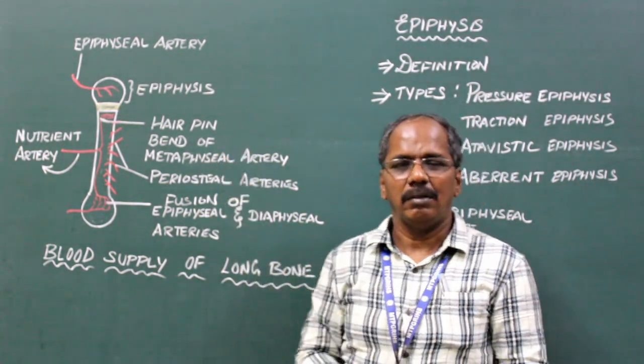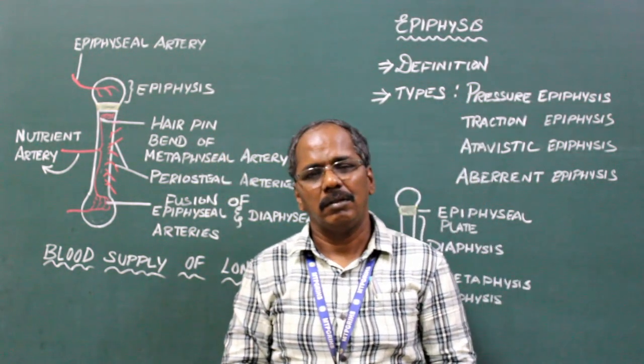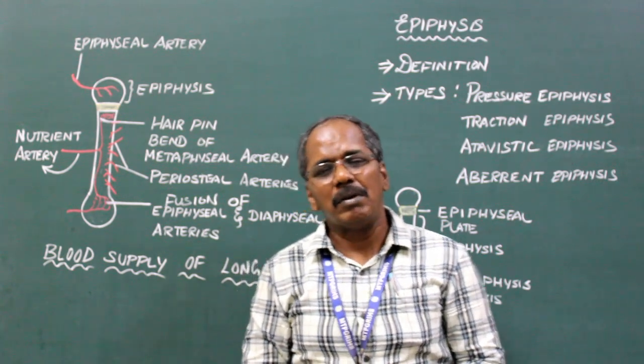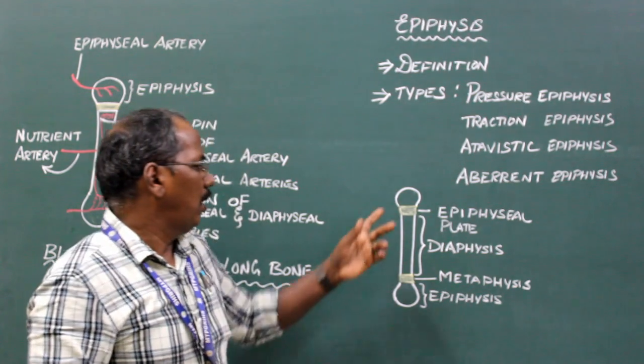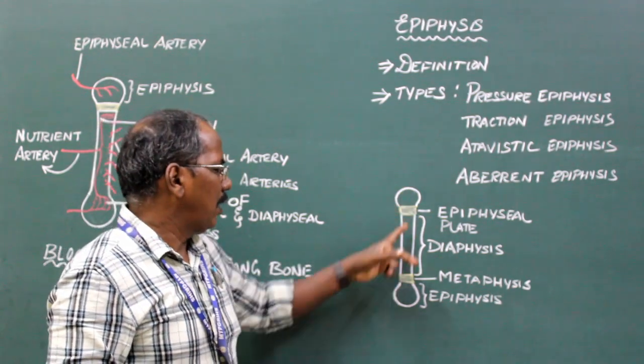Blood supply of bone. A long bone consists of three parts: two ends and a shaft.